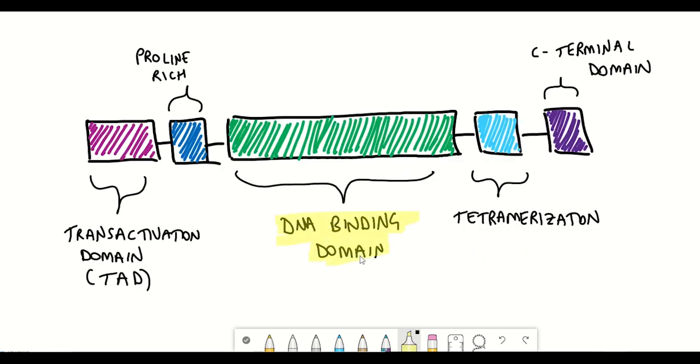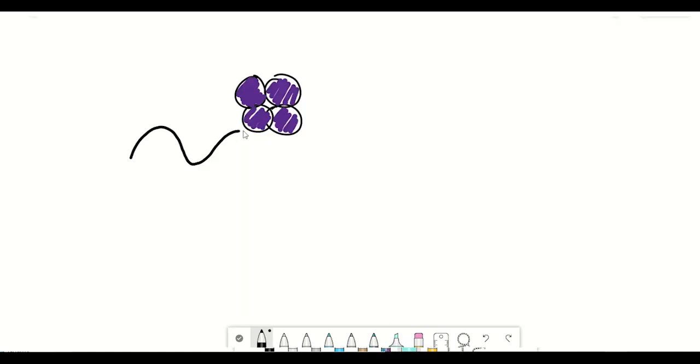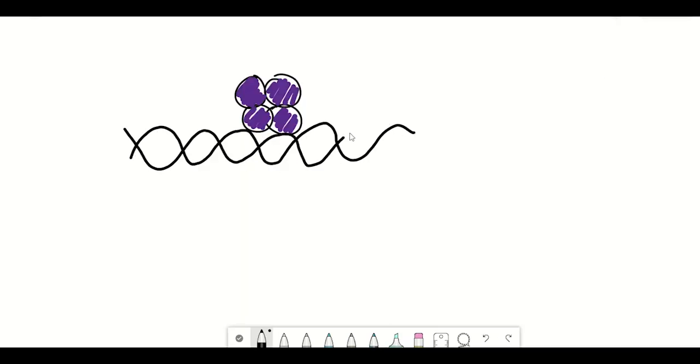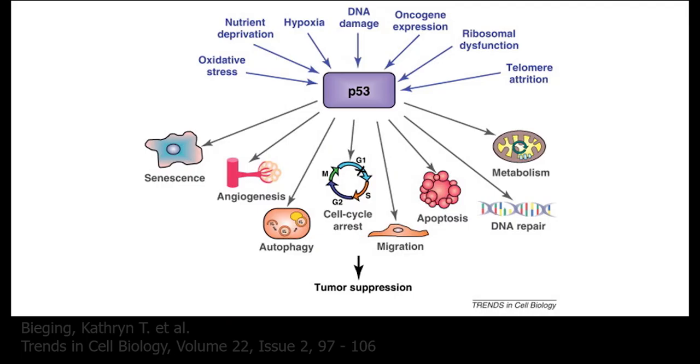And this may not be surprising once you understand the function of P53. So P53 is a transcription factor. It upregulates the expression of different genes within a cell. And P53 gets activated by a variety of different stress responses within a cell and coordinates different downstream responses such as cell death or cell cycle arrest depending on the upstream signals to help mediate the stress in the cell. And if it can't mediate the stress it can result in cell death.